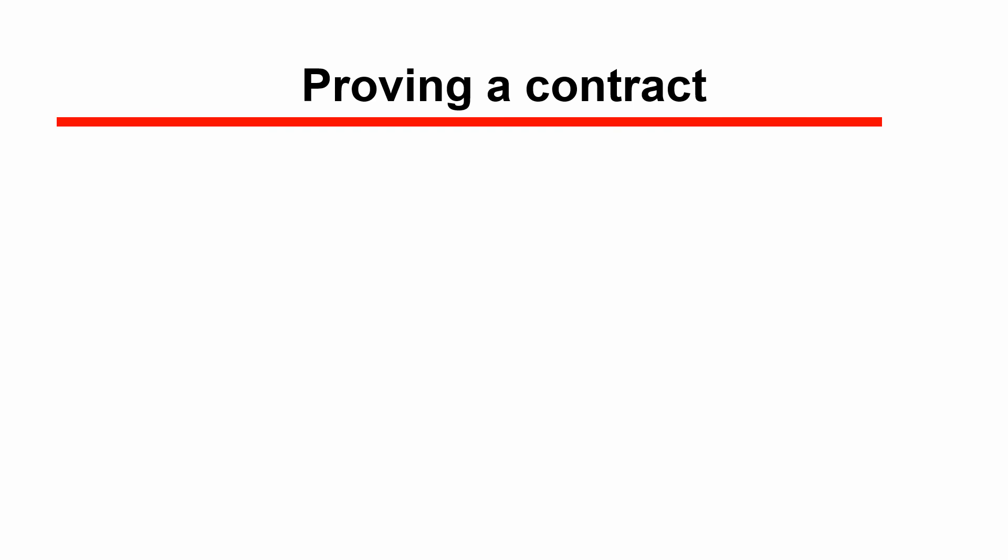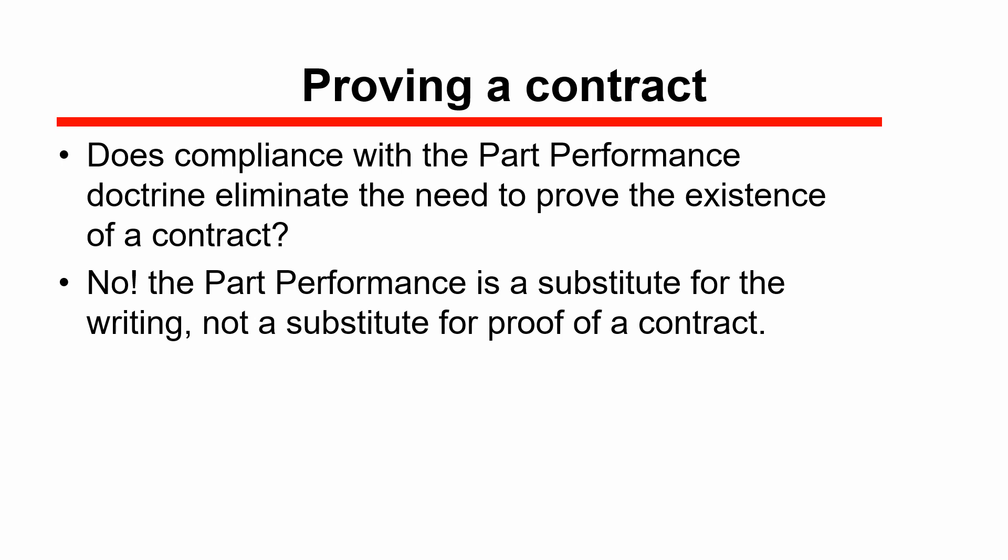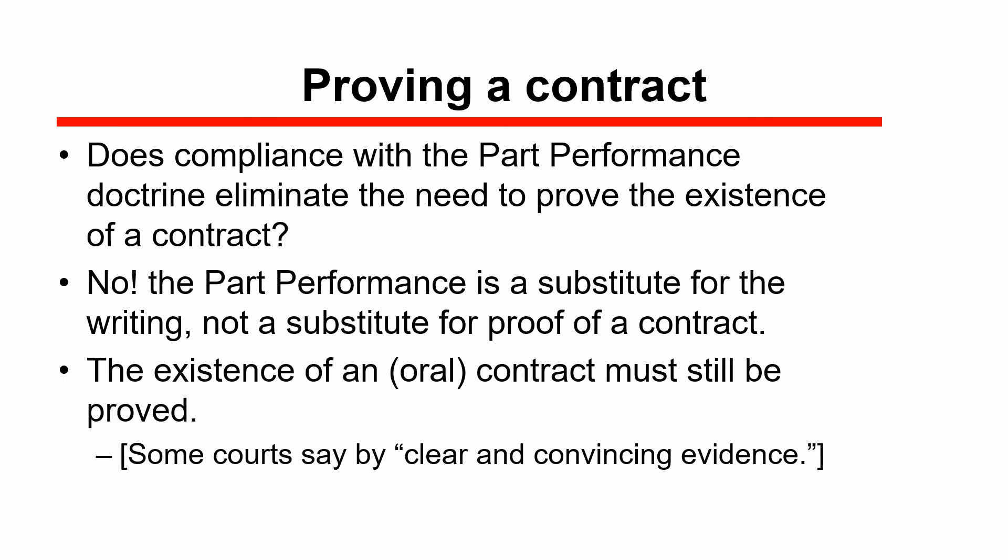Does the existence of the part performance doctrine avoid the necessity to prove that there was a contract? Not at all. Proving the contract is absolutely essential, and part performance won't do it by itself. We have to prove there was a contract before we even get to the question of part performance. Part performance is a substitute for the writing, not a substitute for proof of the existence of a contract. An oral contract still has to be proved even if we use the part performance doctrine — some courts will even say it must be proved by clear and convincing evidence.